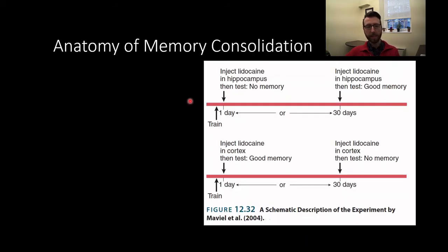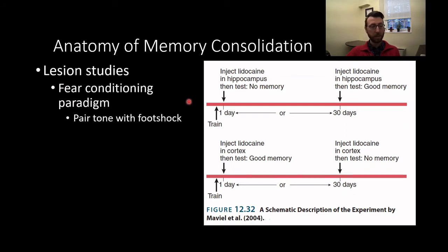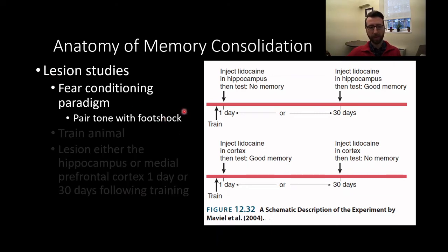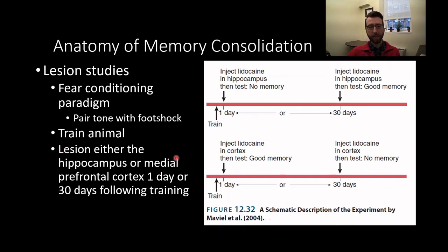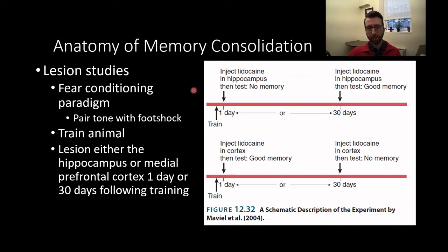This has been shown more cleanly with animal work. Lesion studies and temporary inactivation studies provide a wealth of evidence showing similar data. Your book specifically talks about a study by Mabel et al. The basic idea: you have a fear conditioning paradigm where a tone is paired with a foot shock, and this memory formation requires the hippocampus. The animal is trained, and then the region is either lesioned or temporarily inactivated one day or 30 days following training — either the hippocampus or the medial prefrontal cortex. Up here we have representations of the manipulations of the hippocampus, and down here representations of manipulations of the cortex.